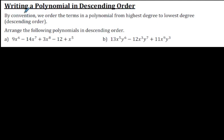Some fancy words would say, by convention we order the terms in a polynomial from highest degree to lowest degree, in descending order. So, you don't have to worry about all those words. Let's just do this.